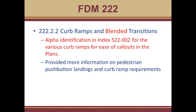In 222.2.2, we've changed the heading to be 'Curb Ramps and Blended Transitions' — so we've added the word 'blended' there. We also added a sentence about alpha identification in index 522-002 for the various curb ramps for ease of call-outs in the plans. We also provided more information on pedestrian push-button landings and curb ramp requirements. In general, this section had some reworking to be more succinct and to add clarity.